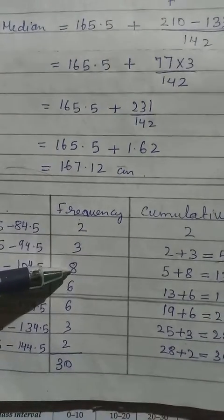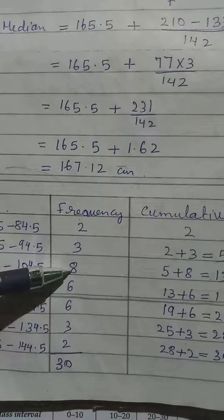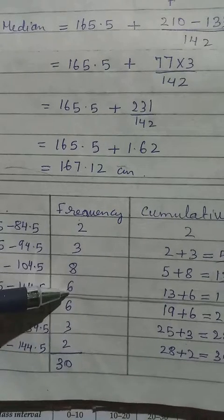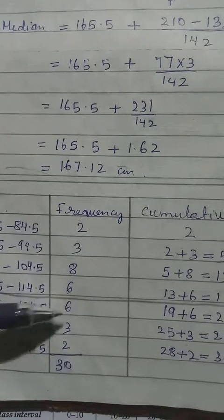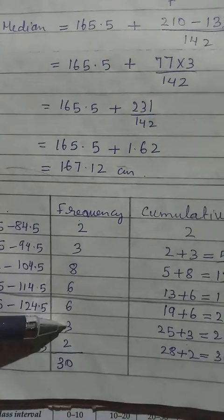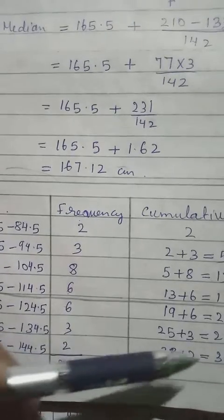Then 5 plus 8, you get 13. 13, you plus with 6, 19. 19 with 6. You will get 25. 25 with 3, 28. 28 with 2, 30.